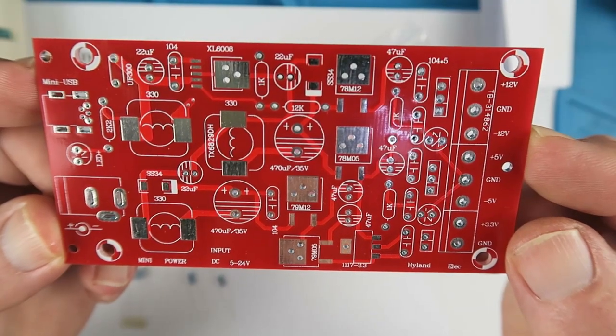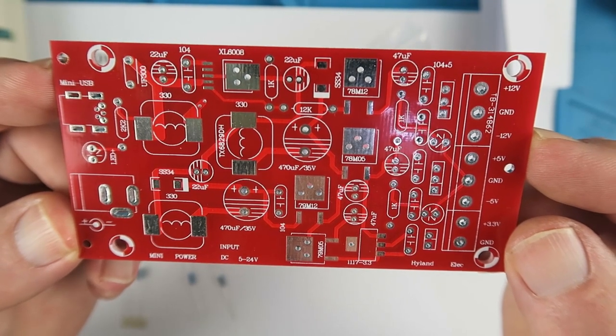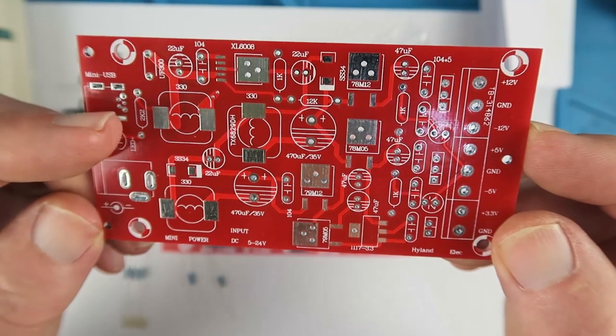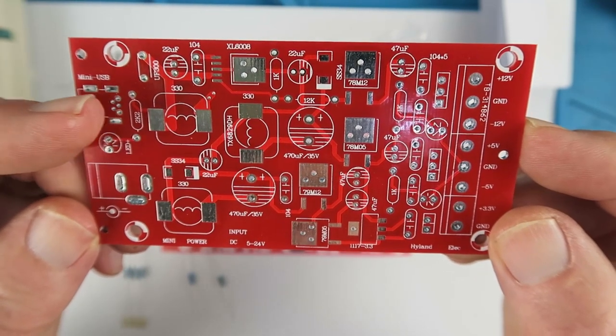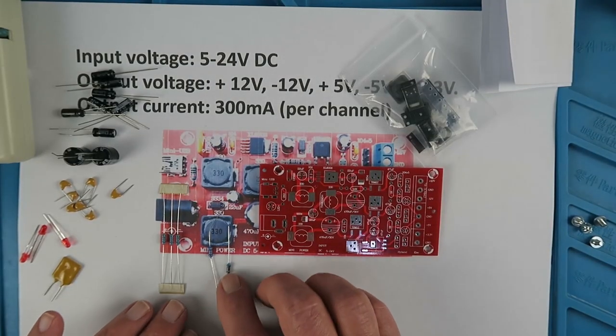In common with most Highland kits, there is no instructions. But the board is so clearly laid out that it's not really difficult to find out where the components go. So 2K2 resistor there, for example. There are only five resistors to put in place.